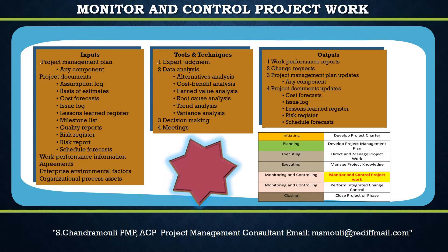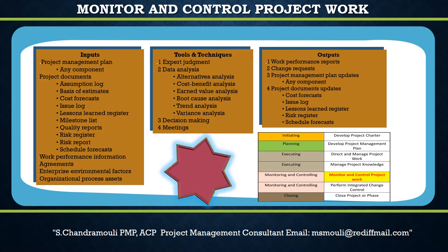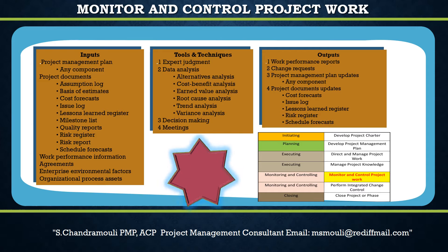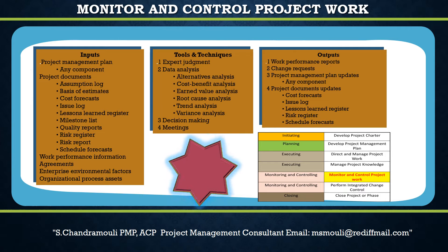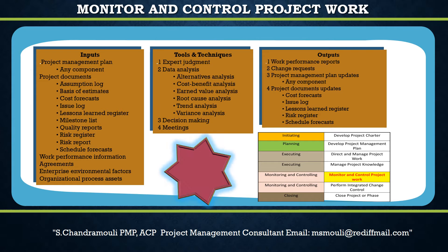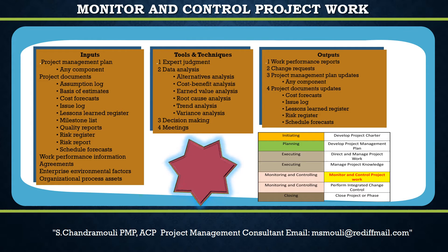In order to record, store, and sometimes distribute work performance information, a physical or electronic representation in the form of project documents is required. Work performance reports are a subset of project documents intended to create awareness and generate decisions or actions. Specific work performance metrics may be defined at the start of the project and included in normal work performance reports provided to key stakeholders. Examples include status reports, memos, justifications, information notes, recommendations, and updates.